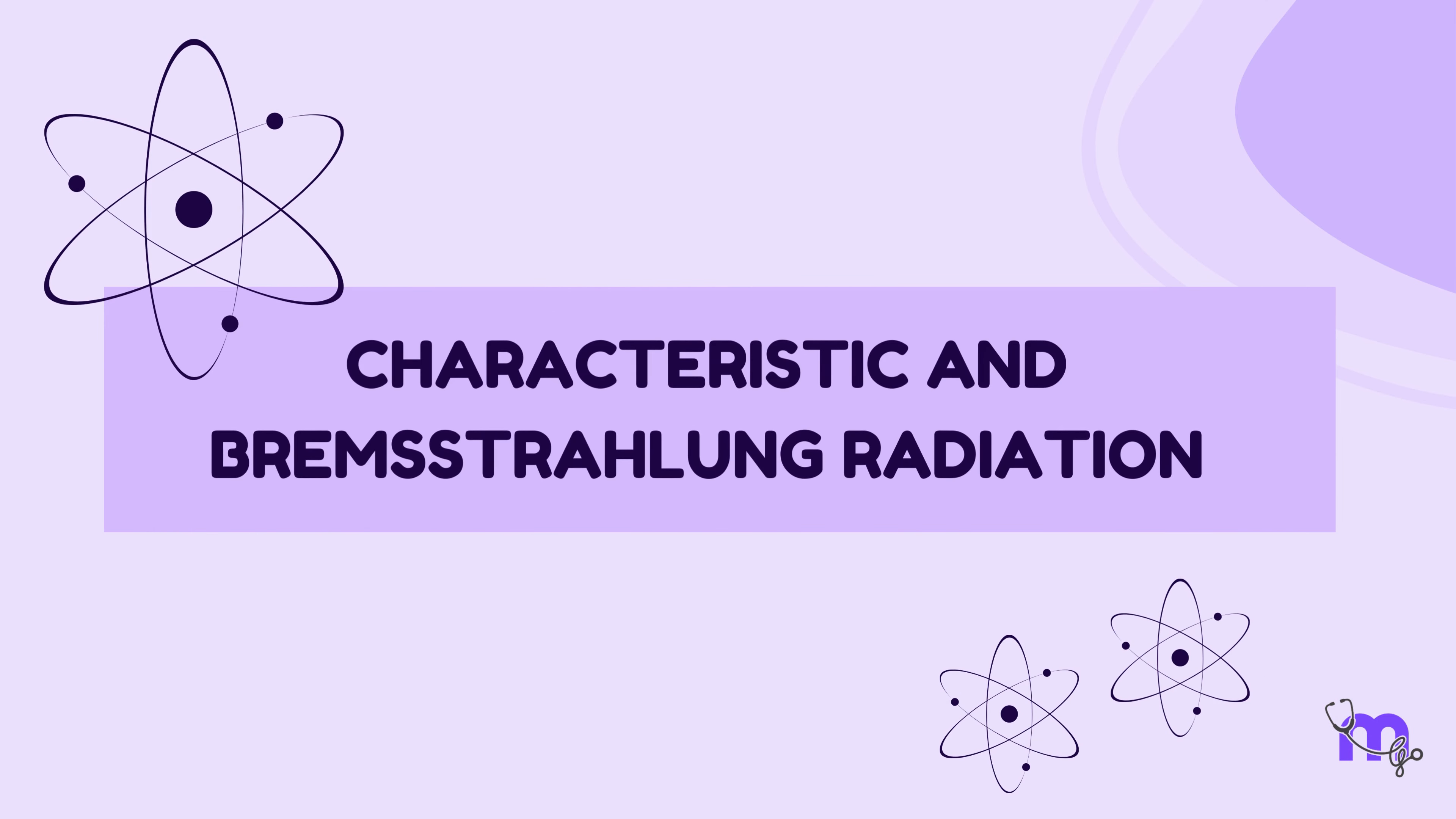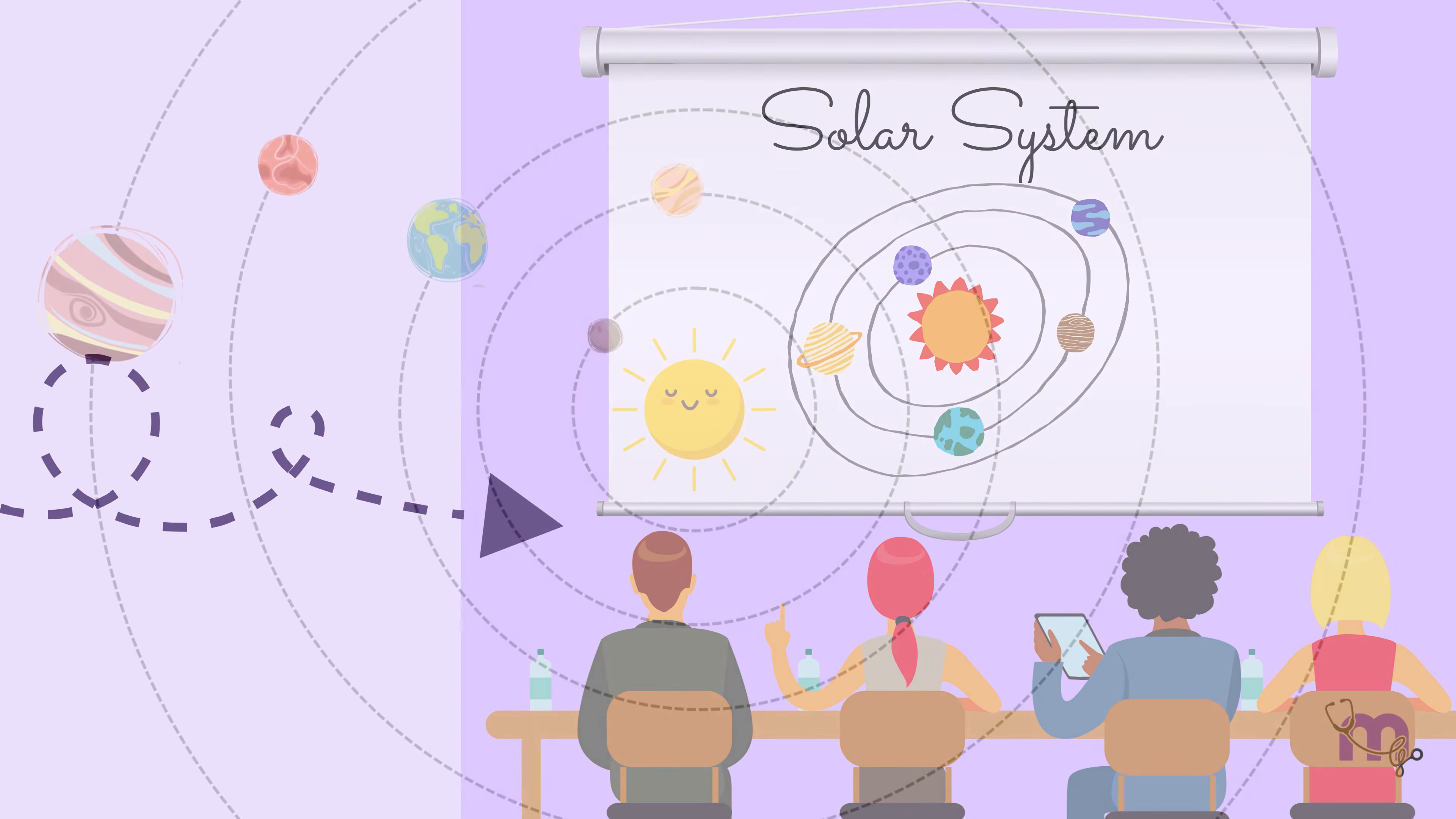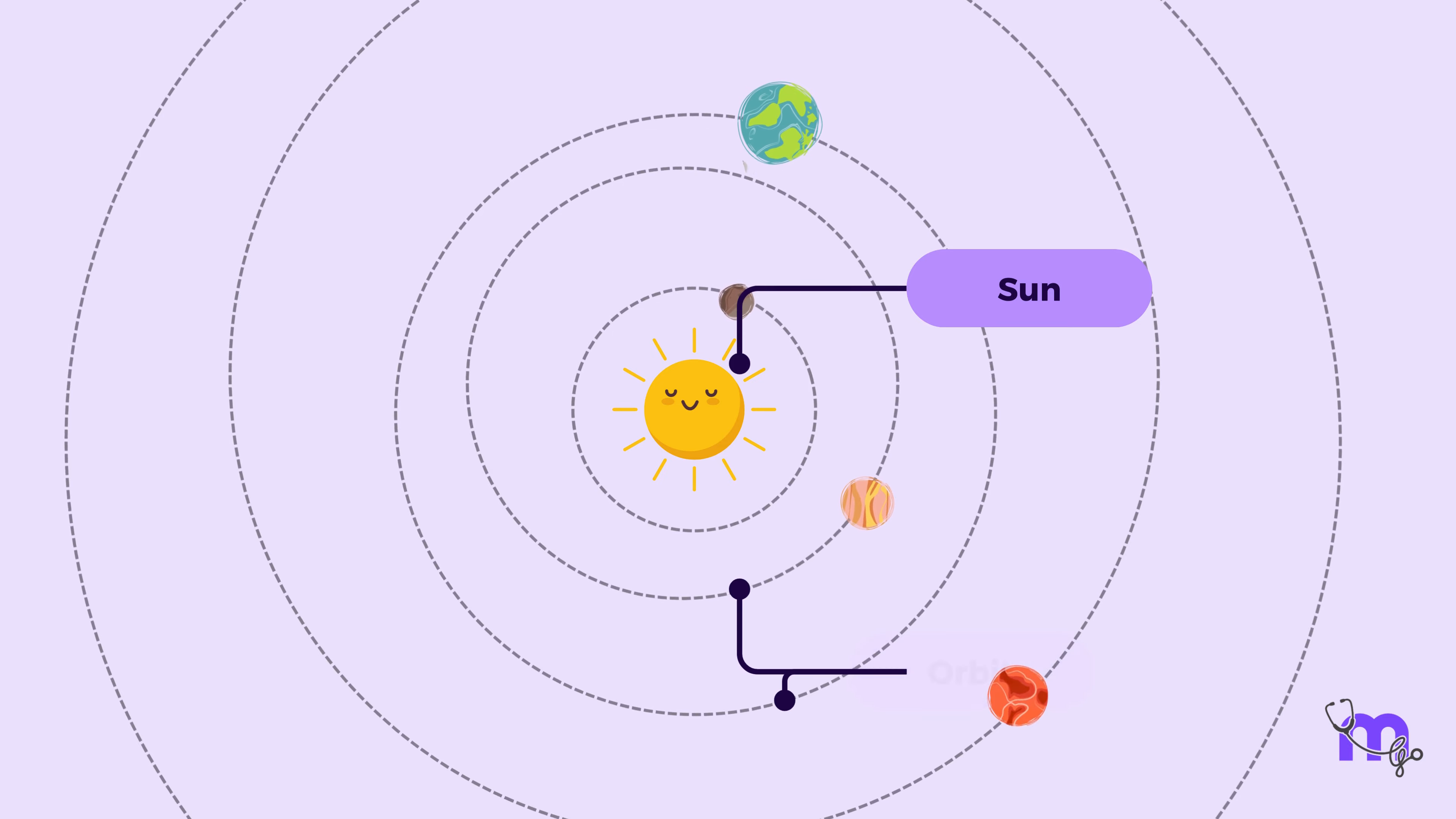Characteristic and Bremsstrahlung Radiation. Before we delve into understanding what the terms characteristic radiation and Bremsstrahlung radiation are, let's walk down memory lane and revisit our school days and recollect the diagrammatic representation of our solar system, wherein we have the sun in the center and all our planets revolving around the sun in their own specific paths called orbits.